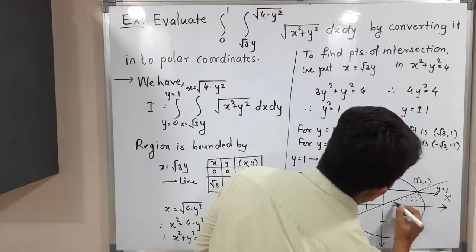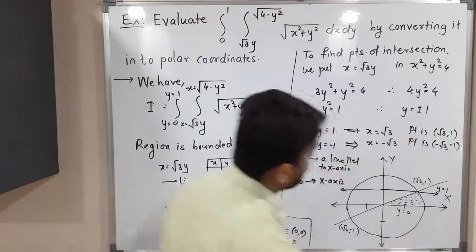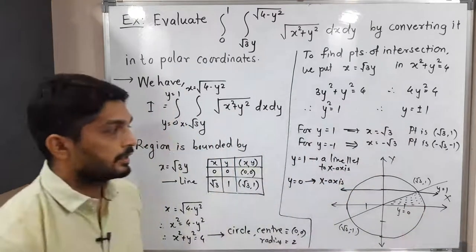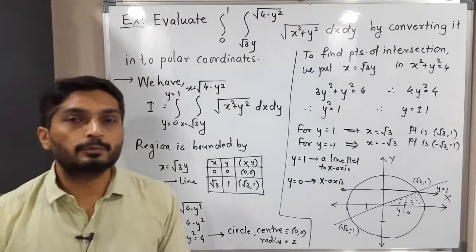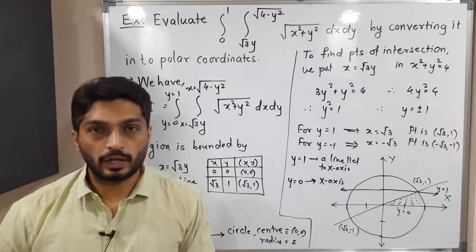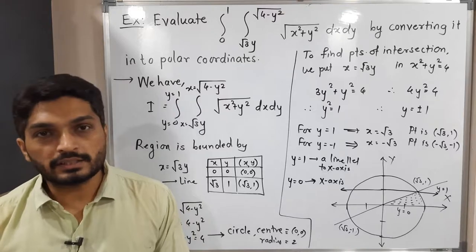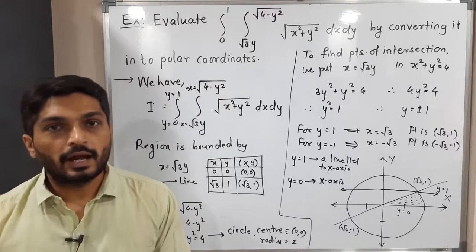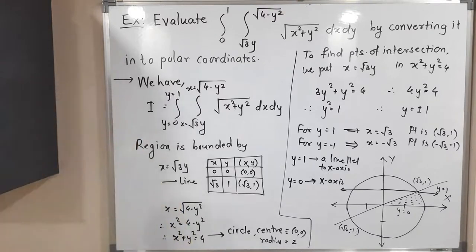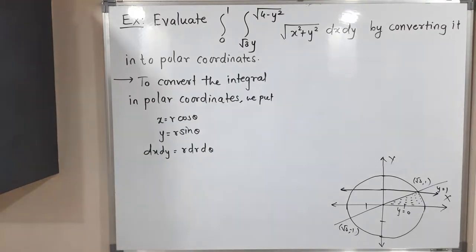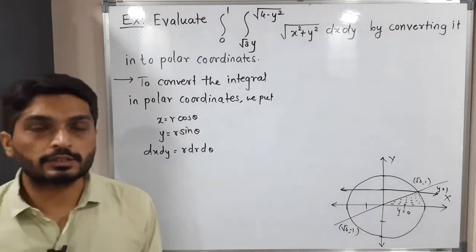To convert to the polar coordinate system, we substitute x = r cosθ, y = r sinθ, and dx dy = r dr dθ. Our first task is to convert the equations of all the curves into the polar coordinate system.